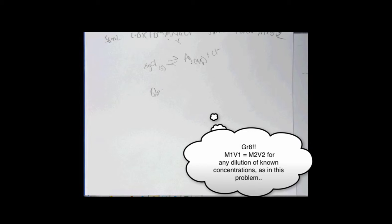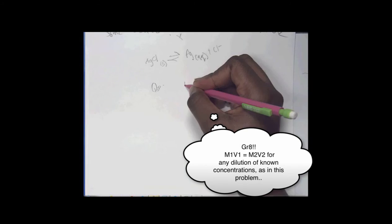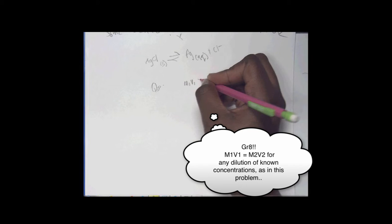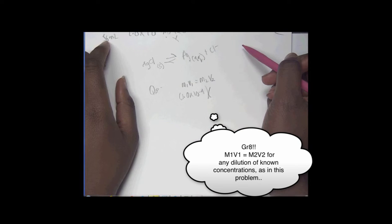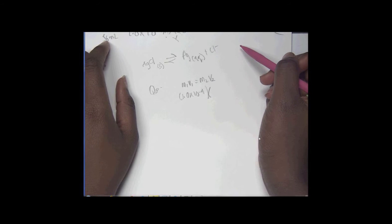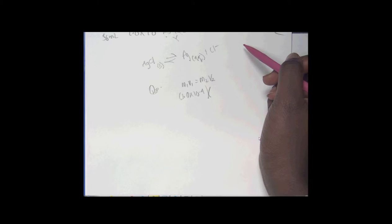How do we do that? M1V1? M1V1 equals M2V2. You added 50 milliliters of each to the mixture, so you should be able to get everything you need from that.